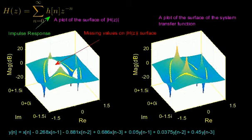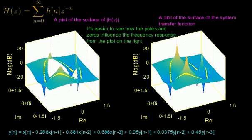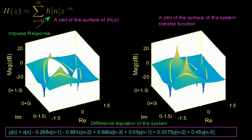The reason it's more useful is because it's possible to see how the poles and zeros of a system influence a system's frequency response more easily with this type of view. I'll put a link to a video explaining how poles and zeros influence a system's frequency response in the description section of this post. The surface on the left, which shows the missing values, is the Z transform of the impulse response of the example system, while the surface on the right shows the surface associated with what's known as a system's transfer function.